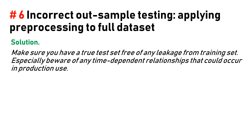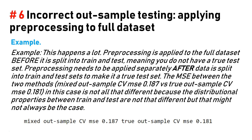Solution: make sure you have a true test set free of any leakage from the training set. Especially beware of any time-dependent relationships that could occur in production. This happens a lot: pre-processing is applied to the full dataset before it is split into train and test, meaning you do not have a true test set. Pre-processing needs to be applied separately after data is split into train and test sets. The mean squared error difference in this case may not be large if the distributional properties are similar, but that might not always be the case.